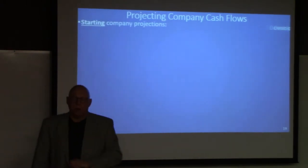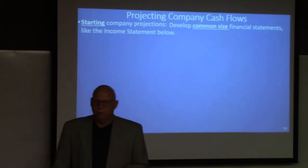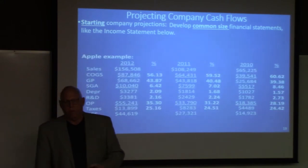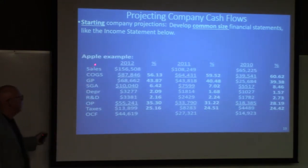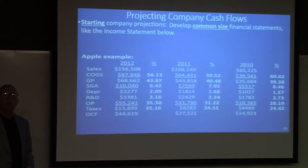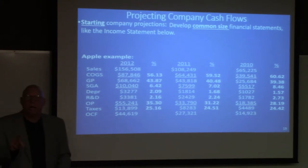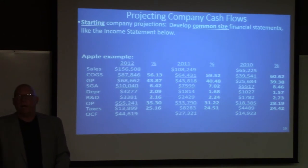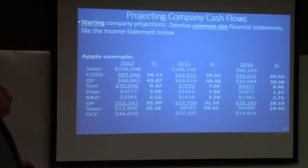Let's start our company projections. We'll develop common-size financial statements like the income statement shown here. Here's Apple — we're going to use Apple — and here is their income statement. Notice that we do not have interest expense on here, and we do not have net income. Instead, we have operating profit and taxes. We take our operating profit, add our depreciation, subtract our taxes, and we get operating cash flow. That is what we're trying to figure out — what will our operating cash flows be, and then what cash outflows will we have to arrive at free cash flow?